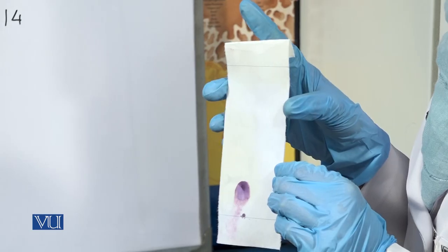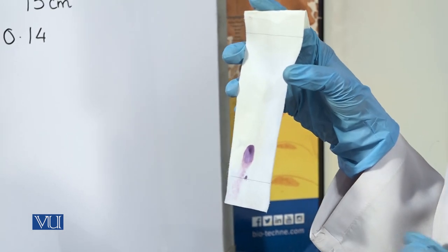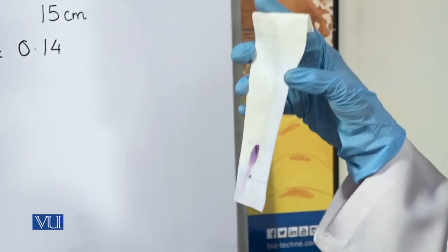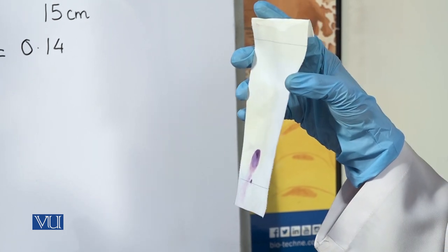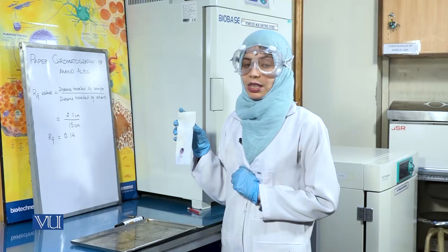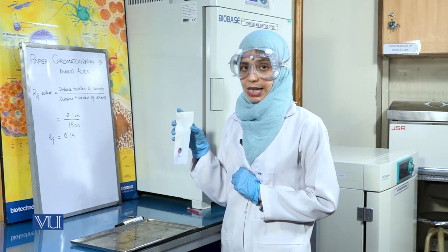Paper chromatography is a valuable tool for the identification of amino acids. Each amino acid has a different RF value based upon the presence of the R group in that amino acid. The RF values can be used to identify the amino acid present in the solution.